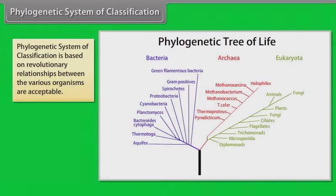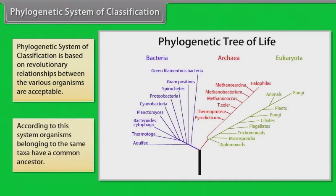Phylogenetic system of classification is based on evolutionary relationships between the various organisms. According to this system, organisms belonging to the same taxa have a common ancestor.